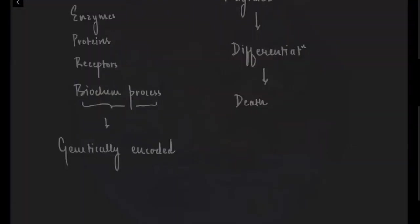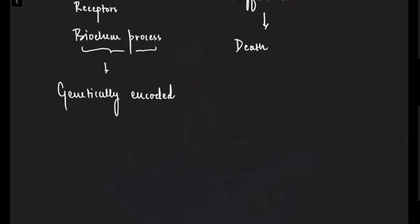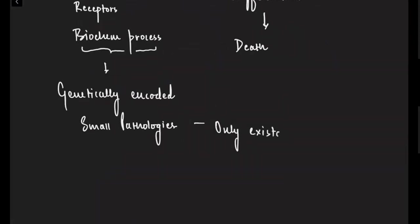These processes are essentially genetically encoded. When the genetic encoding of these processes has problems or issues, these are small pathologies. But the existence of these small pathologies alone does not mean that a person is going to have depression, anxiety, or schizophrenia.